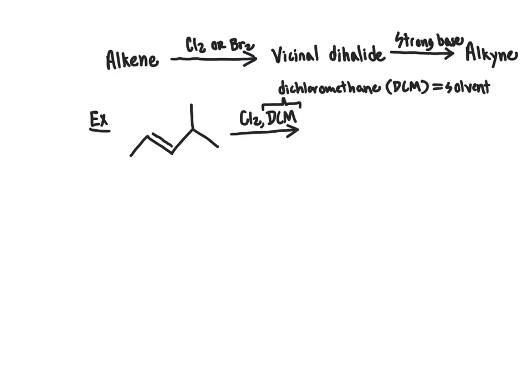We can ignore the DCM when thinking about the product. As a result of this reaction, we expect addition of the two chlorine atoms across the carbon-carbon double bond. The intermediate is stabilized through resonance by forming a three-membered halonium ion. The two chlorines add to what was originally the carbon-carbon double bond, giving us our vicinal dichloride.